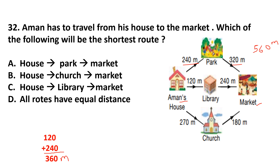The third route (house to church to market) is 270 plus 180 = 450 meters. The shortest route is house to library to market at 360 meters. The answer is option C.